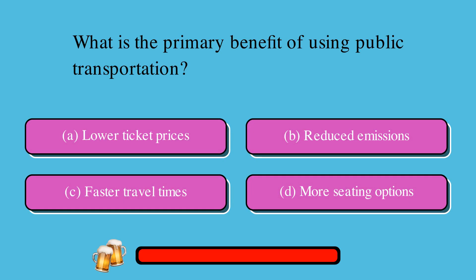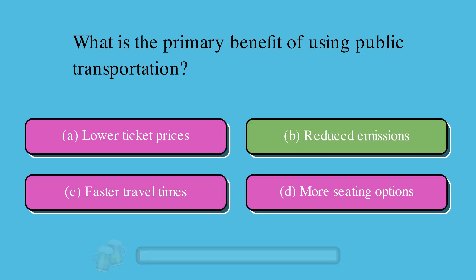What is the primary benefit of using public transportation? A. Lower ticket prices, B. Reduced emissions, C. Faster travel times, or D. More seating options? The correct answer is B. Reduced emissions.